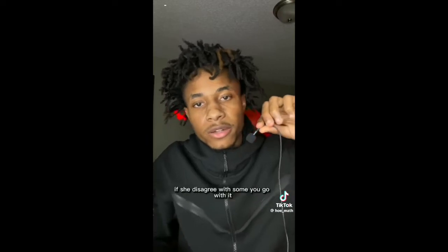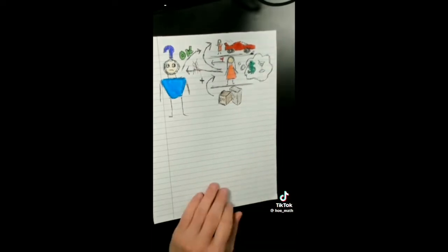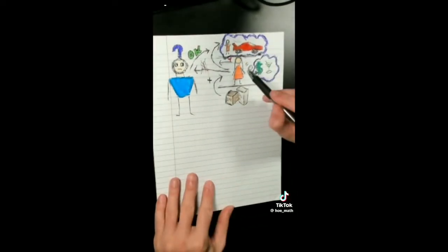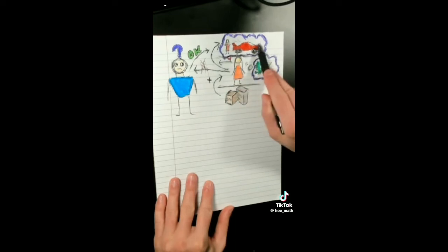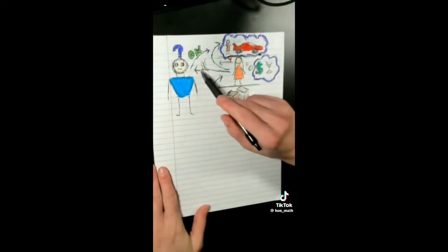The second thing: you let her get everything her way. If she disagree with something you go with it. This works the same way, but with thoughts instead of things. You have to put what you want over what she wants. Again, if what she wants is leading the relationship, then you are very boring and boredom justifies divorce.